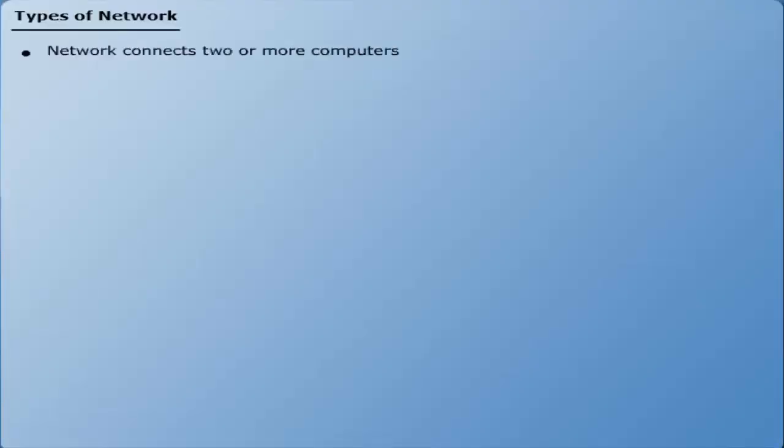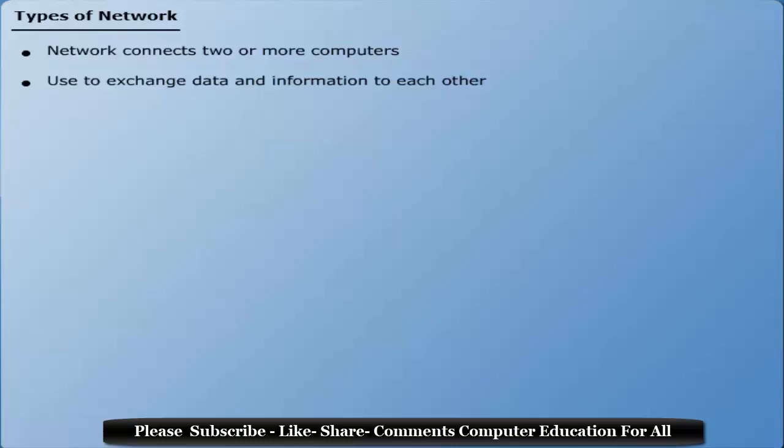Types of network. A computer network connects two or more systems in order to exchange data and information with each other. Computer networks are classified into three broad categories.